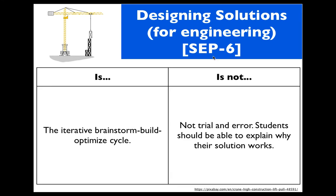SEP6 also has an engineering aspect. The ultimate product of the engineering process is really a solution to a problem, so we want to give practice at designing solutions. That often involves an iterative cycle of brainstorming, building, optimizing, and testing. Designing solutions is not trial and error — we want our students to be able to explain why their solution works and not just happen upon it.